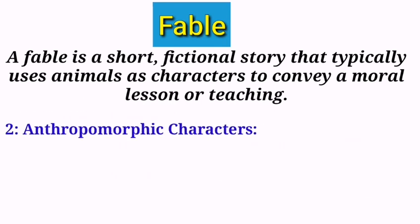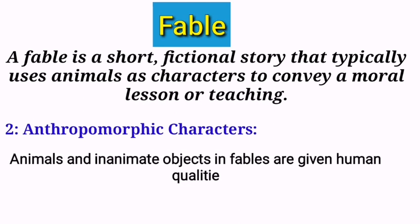Anthropomorphic Characters. By this point, it means that animals and inanimate objects in fables are given human qualities and abilities. They think, speak, and act like humans, allowing them to engage in situations and conversations that illustrate the moral lesson. Simply, the characters are mostly animals which talk, think, and behave like humans.